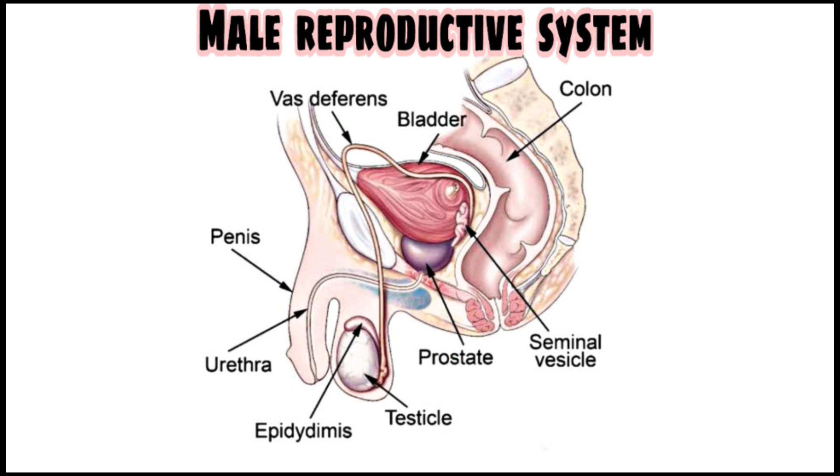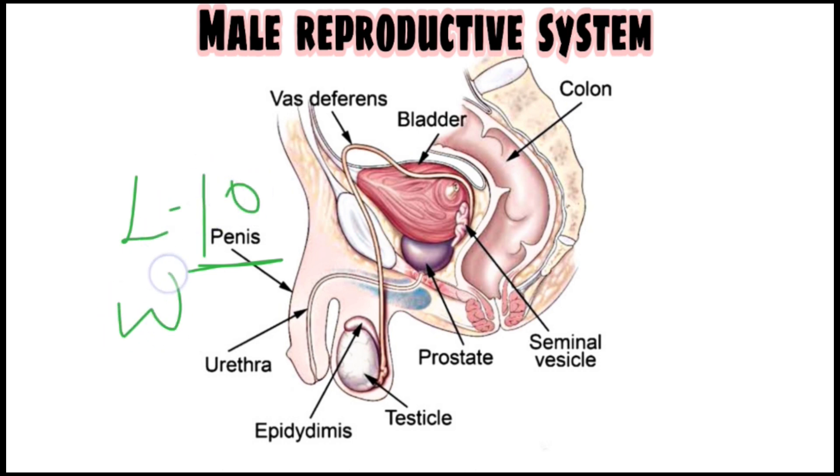The main organ is the penis. The length of the penis is around 10 centimeters and the width is around 4 centimeters.